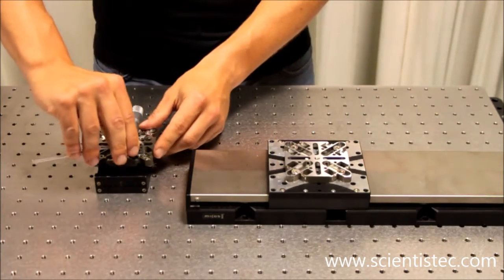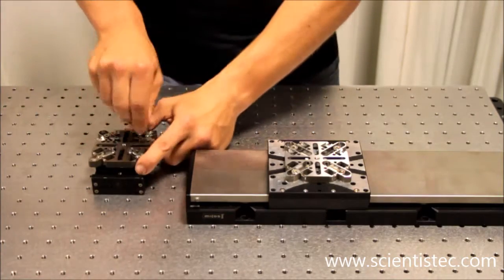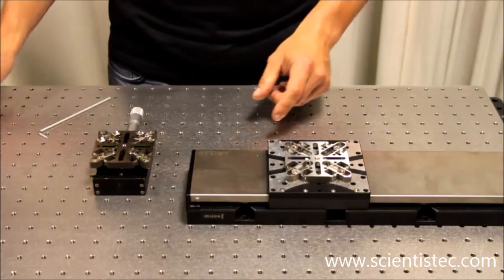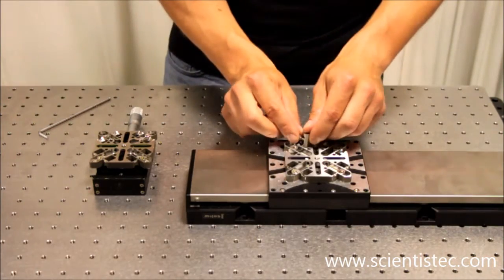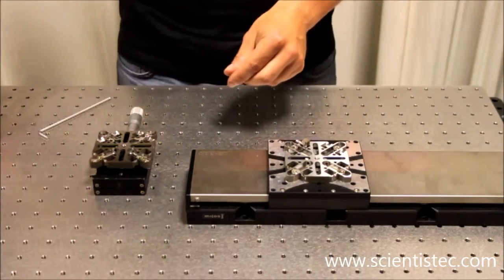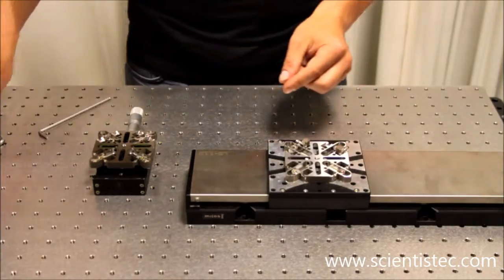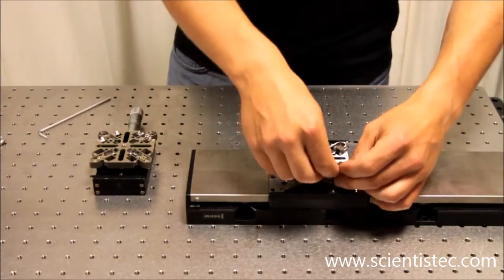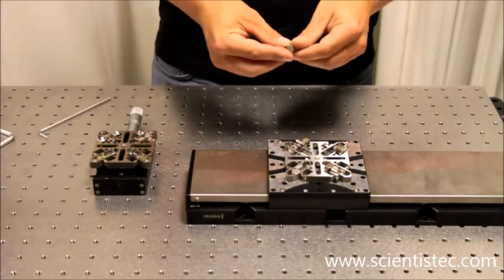After all screws have been tightened properly, the two adapters need to be connected to each other. Therefore I use the connection blocks which are included in the set and plug them into the first adapter. To achieve high stiffness, I use four of them. The connection block screws are pointing outwards to make sure they are accessible even when mounting large devices.